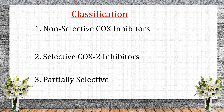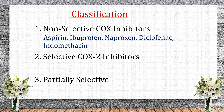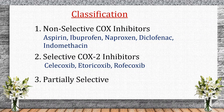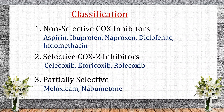Classification of NSAIDs. NSAIDs are classified into three main categories based on their selectivity for cyclooxygenase (COX) enzymes. Non-selective COX inhibitors — examples: aspirin, ibuprofen, naproxen, diclofenac, indomethacin. Selective COX-2 inhibitors — examples: celecoxib, etoricoxib, rofecoxib. Partially selective COX-2 inhibitors — examples: meloxicam, nabumetone.